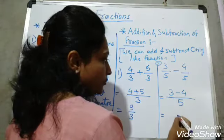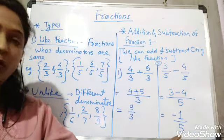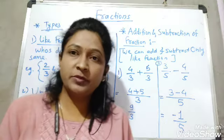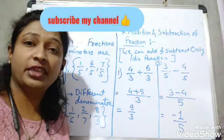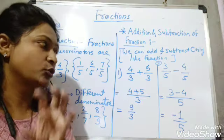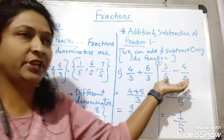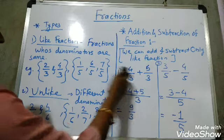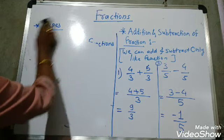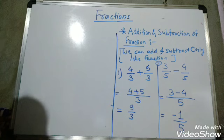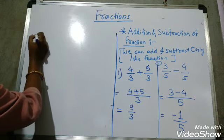For example, 3 minus 4 in the numerator gives minus 1, so the answer is minus 1 upon 5. Do NOT add or subtract the denominators — if you do, your answer will be wrong.